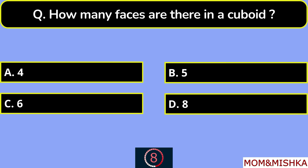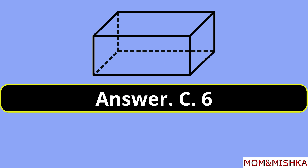How many faces are there in a cuboid? There are 6 faces. Option C.